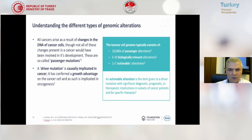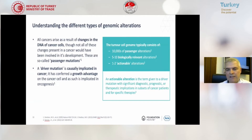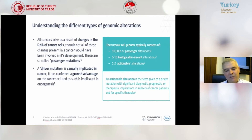We have to understand all the genomic alterations. All cancers arise as a result of changes in the DNA of cancer cells, though not all changes present in a cancer would have been involved in its development — these are called passenger mutations. We may see 10,000 passenger mutations, but in one specific cancer like lung cancer, we see only 5 to 10 biologically relevant alterations. These are called driver mutations that can cause the actual cancer. One or two of the driver mutations can also be actionable, meaning we can target this mutation with a specific drug to treat the patient, and sometimes a cure can occur.